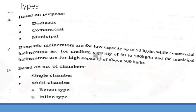Moving on to the types of incineration — there are different types based on their purpose. It can be domestic, commercial, or municipal. A domestic incinerator is used mainly for domestic purposes with a very small capacity of about 50 kg per hour. A commercial incinerator is of medium capacity, up to 500 kg per hour. A municipal incinerator is for high capacity, above 500 kg per hour.